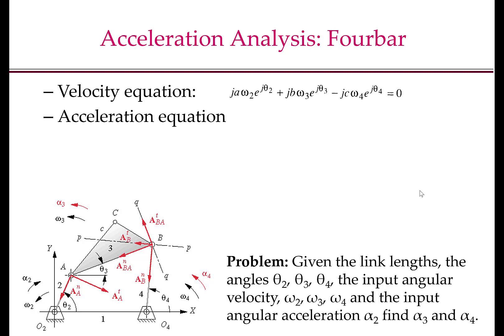The acceleration analysis problem is stated as follows. Given the link lengths of the mechanism, the angles theta 2, theta 3, and theta 4 — that's the position of the mechanism — the input angular velocity omega 2, omega 3, and omega 4, and the input angular acceleration alpha 2, we have to find the accelerations alpha 3 and alpha 4. Alpha 3 is the angular acceleration of the coupler, and alpha 4 is the angular acceleration of the output link or link 4.